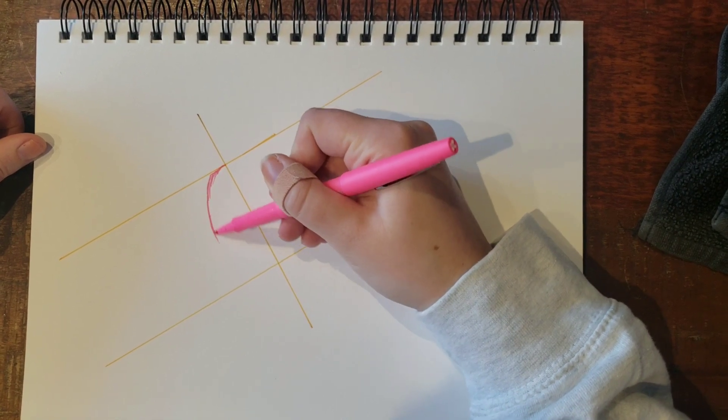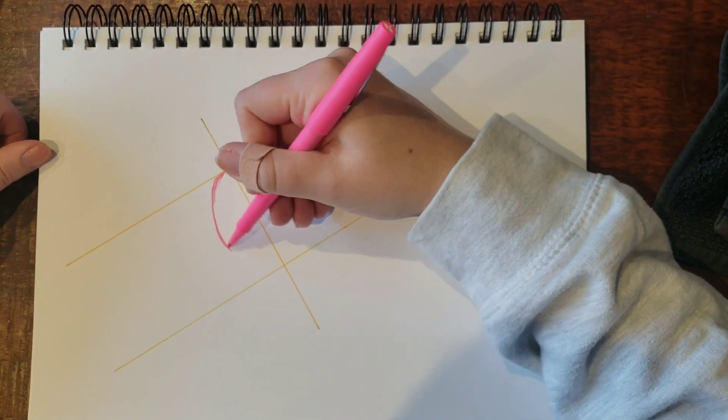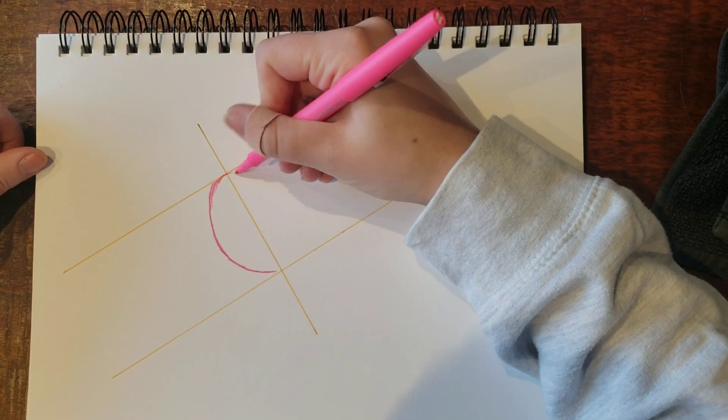So what we're doing at this stage is we're just drawing the skeleton of the letters and we will bulk it out afterwards.